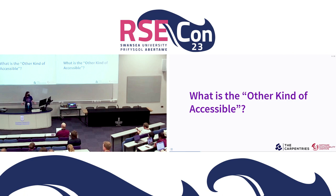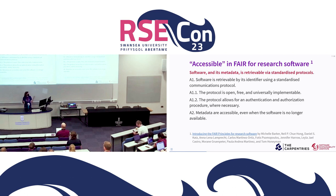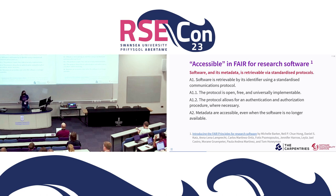So what do I mean when I'm talking about the other kind of accessible? I want to talk about what accessible is described as in the FAIR for research software, specifically the FAIR principles. This states that software and its metadata should be retrievable by a standardised protocol — protocols that are open, free, allow authentication, and so on. This doesn't mention disability anywhere.